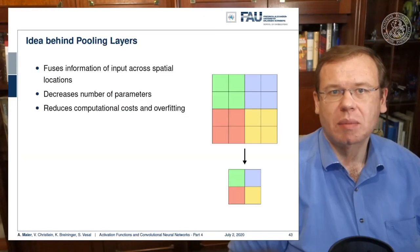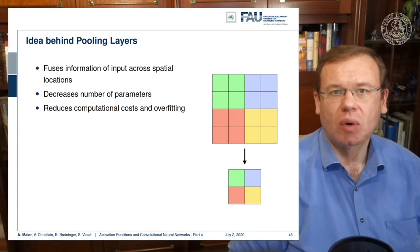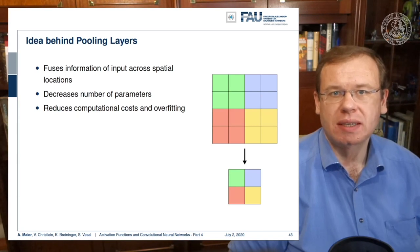The main idea behind this is that you want to reduce the dimensionality across the spatial domain. So here we see this small example where we summarize the information in the green rectangles, the blue rectangles, the yellow and the red ones, to only one value. So we have a two by two input that has to be mapped to a single value.